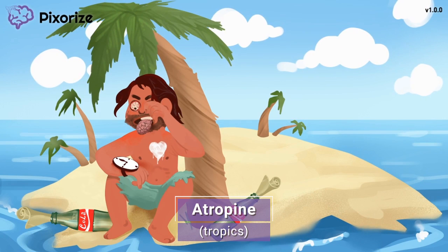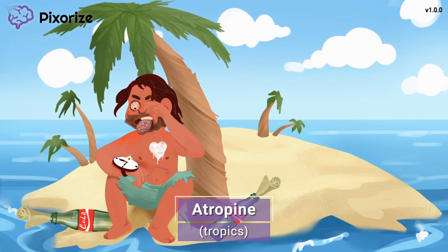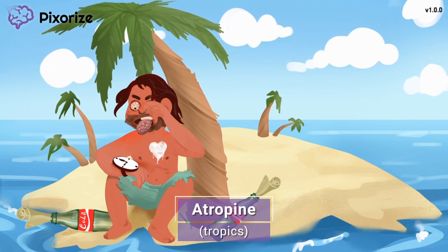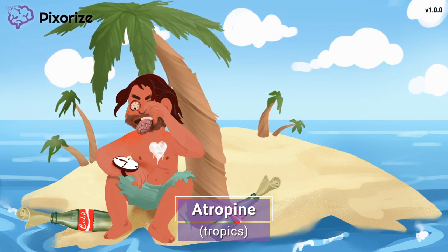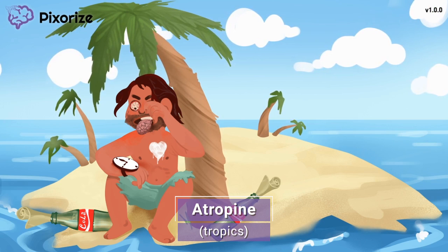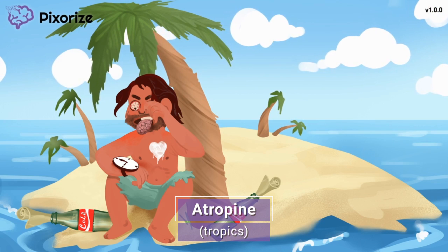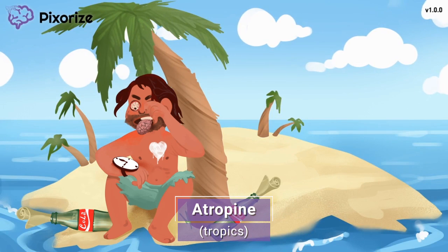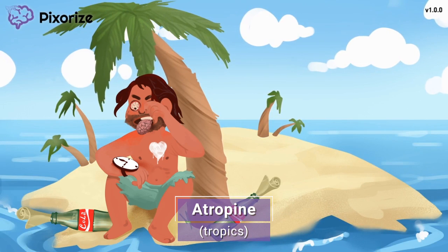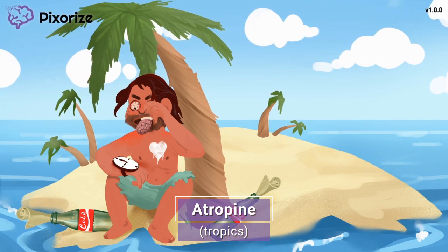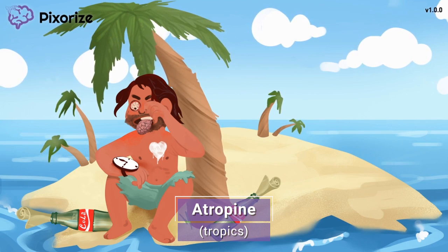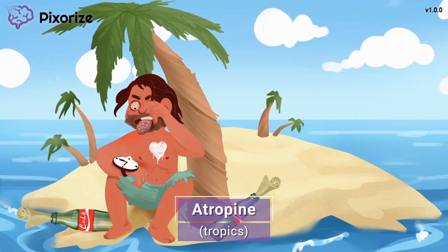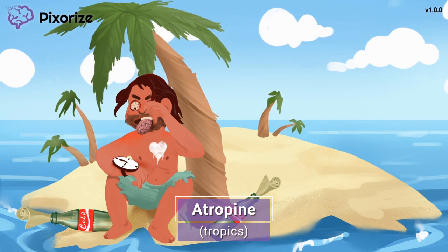Aloha and welcome to this wonderful tropical island. You can tell we're in the tropics by all the tropical palm trees, the tropical sand and the sunny tropical weather. This tropical setting is our symbol for atropine because when you see the word atropine, it kind of looks like the tropics. Tropical for atropine.